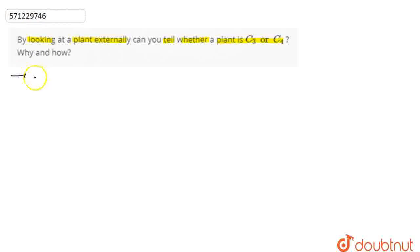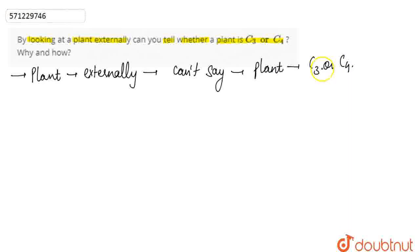So basically by looking at the plant morphology or by looking at the plant externally, we cannot tell whether the plant is C3 or C4.